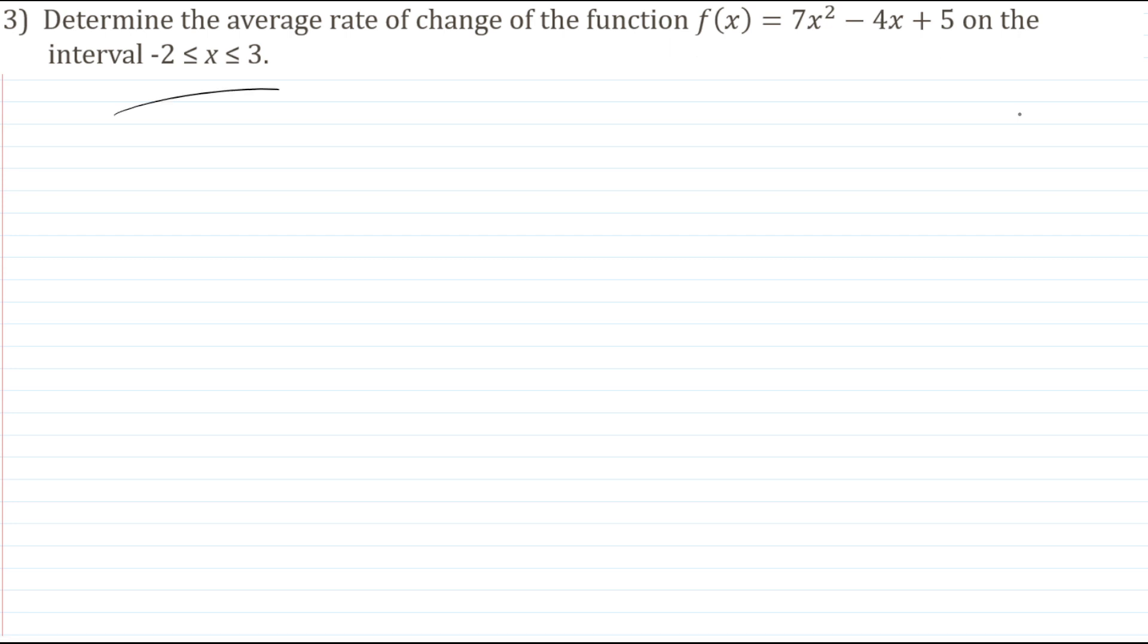So how do we do that? Well, remember that average rate of change refers to the slope of a secant line. In our problem, that secant line is the line that goes from the point on our graph that has an x value of -2, to the point on the graph with an x value of 3.